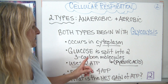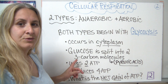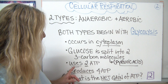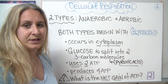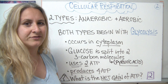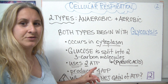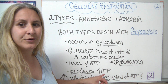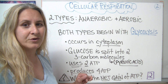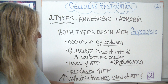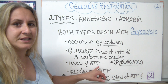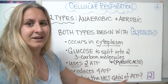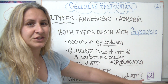During glycolysis, glucose is split into two three-carbon molecules called pyruvic acid. This process uses two ATP — it kind of has to get a little bit of a jump start, so we have to use two ATP before we can get some of our energy. In the end though we produce a total of four ATP. So if we made four ATP and we had to use two ATP, what is the net gain of ATP?